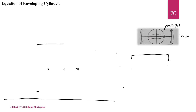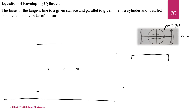Enveloping Cylinder is a surface generated by straight lines that touch the given surface — that is, the given sphere. It is the locus of tangent lines to the given surface that are parallel to a given line, and this is called the Enveloping Cylinder of the surface.